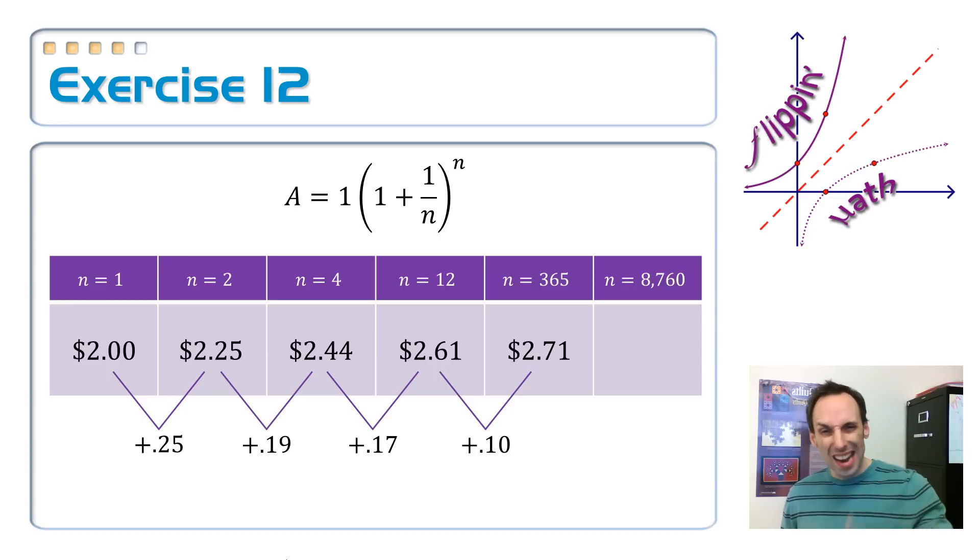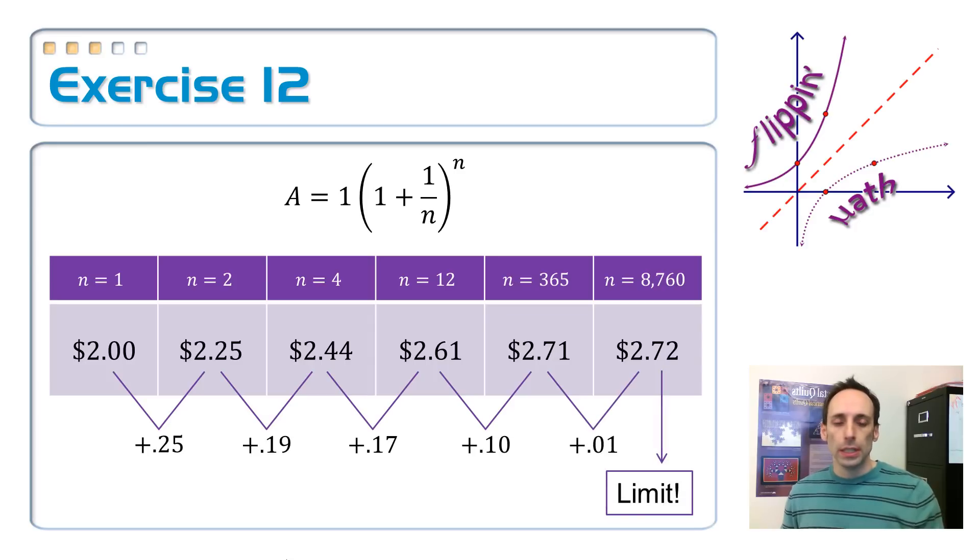So what if I did it every hour? If I compounded every single hour, that's 365 times 24, 8,760. Plug that into the formula and I get $2.72. One penny more than I got before. And there's this brick wall. There's the limit that I just hit. I can't get any more money from that investment. And that's a very special number here.